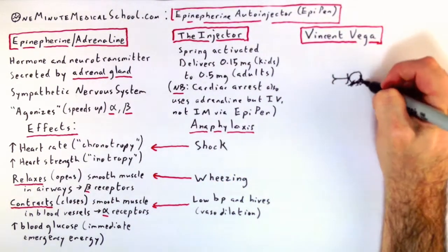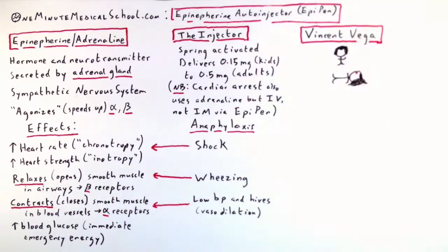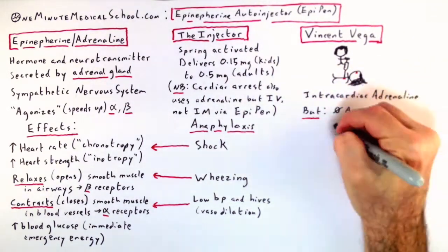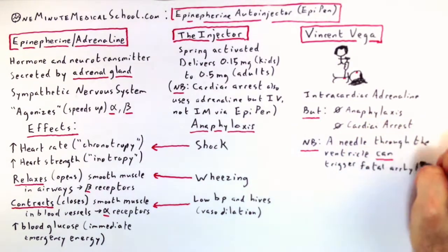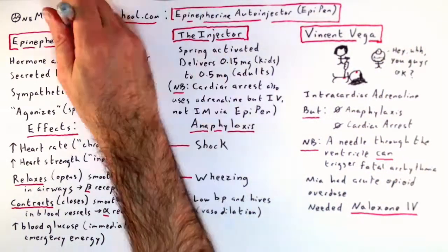Now, Vince Vega administers intracardiac adrenaline directly into Mia Wallace's heart, but she doesn't have anaphylaxis or cardiac arrest, and a needle through the ventricle can trigger a fatal arrhythmia. What she needed was naloxone. So don't let a hitman practice emergency medicine on you.